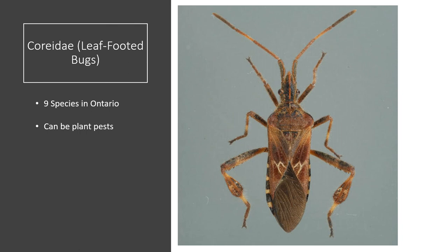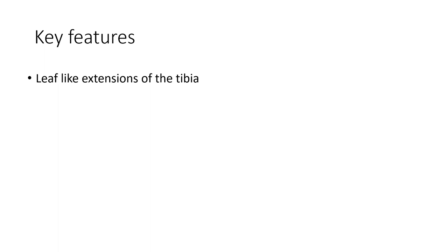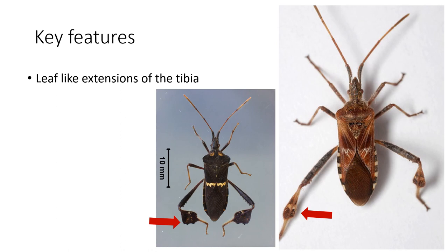Coreidae — leaf-footed bugs. There are nine species in Ontario and they can be plant pests. Key features: they have leaf-like extensions on their tibia. On the right is a picture of the western conifer seed bug, which is very common in Guelph. Leaf-footed bugs all have this very long shape to their bodies.